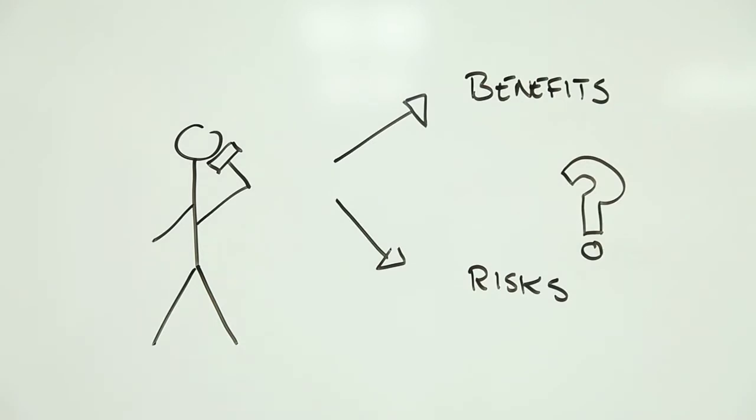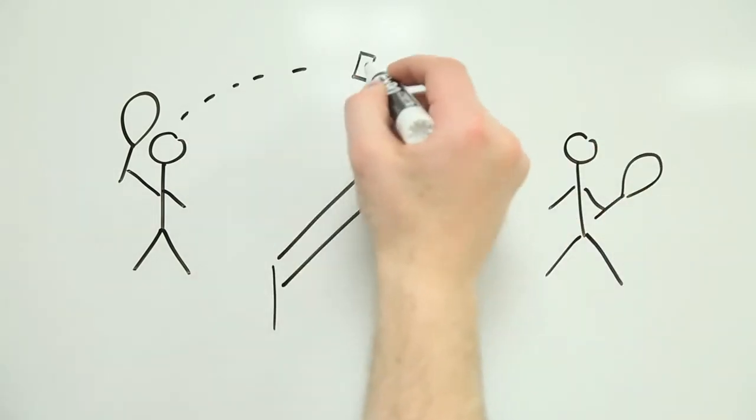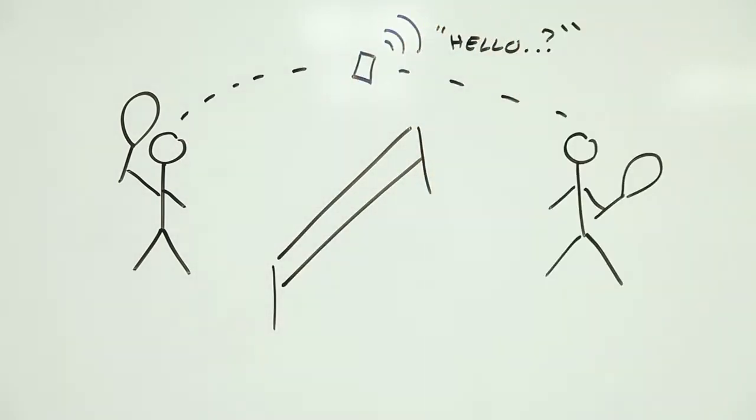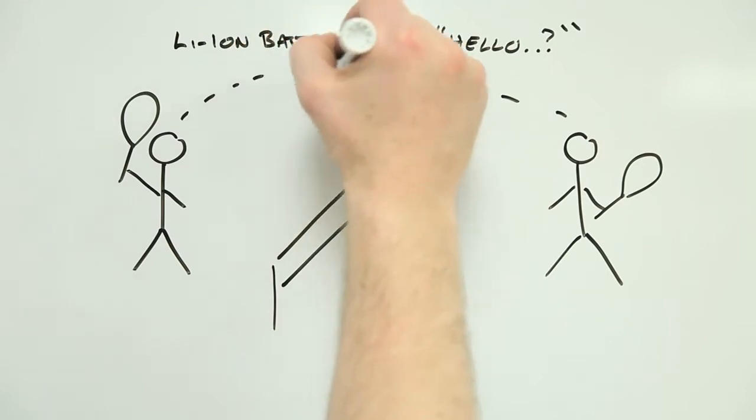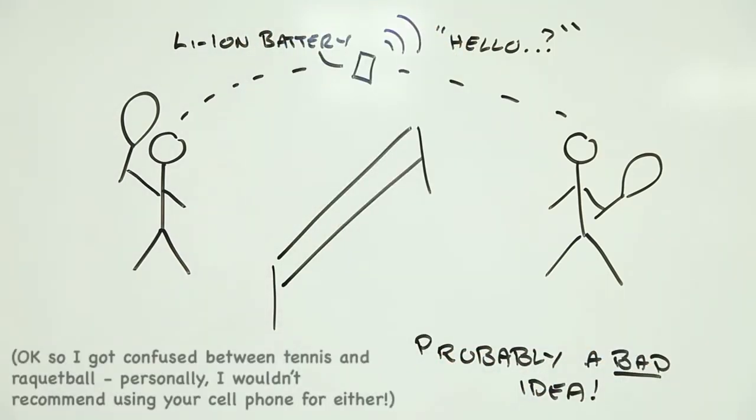For starters, most cell phones these days use lithium-ion batteries which, as a previous Risk Bites explored, can present a fire risk if you abuse them. But so long as you don't treat your phone like a racquetball, you're probably okay.